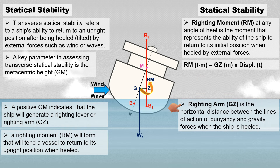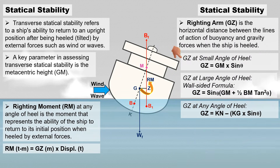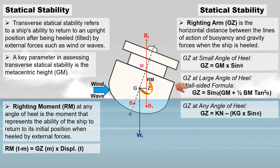The righting lever, GZ, is the horizontal distance between the lines of action of the buoyancy and gravity forces when the ship is heeled. A larger GZ indicates a greater righting moment and a stronger tendency for the ship to right itself. There are several formulas for determining the righting lever. In these formulas, theta represents the angle of heel. When a vessel is heeled at 10 degrees or less, it is considered a small angle of heel, and a specific formula applies. At a large angle of heel, a wall-sided formula must be used.